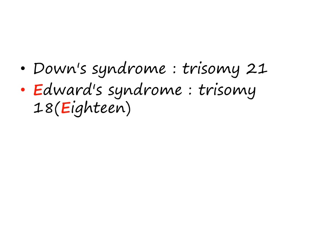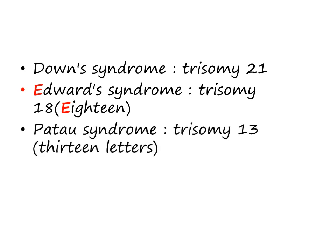Down syndrome is trisomy 21 — you all know that. Edwards syndrome is trisomy 18 because 'Edwards' starts with E and 18 starts with E. Patau syndrome is trisomy 13 — if you count the letters in 'Patau syndrome,' it becomes 13 letters.